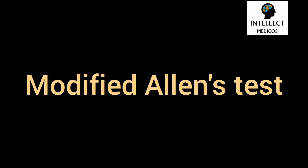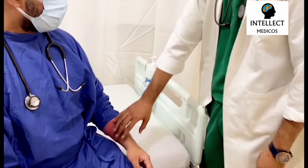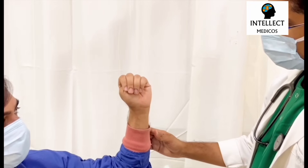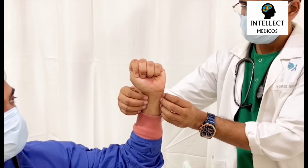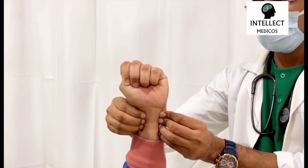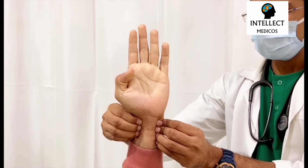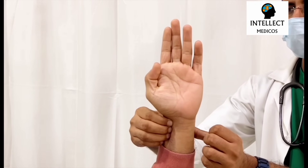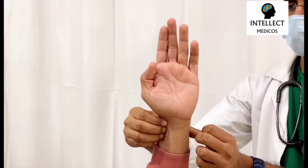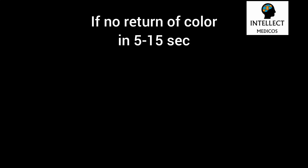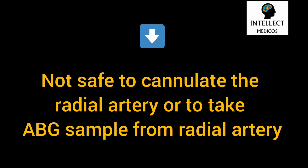Whenever you go for ABG sampling or arterial cannulation at the radial artery, you should perform the modified Allen's test. Ask the patient to raise the limb and clench their fist, then occlude both the radial and ulnar arteries simultaneously, then ask them to open the fist. You will see blanching over the fingertips and palm. Release pressure from the ulnar artery and observe return of color. If this does not occur within 5 to 15 seconds, the test is abnormal — indicating the ulnar artery is not patent and it is not safe to cannulate or sample from the radial artery of that limb.